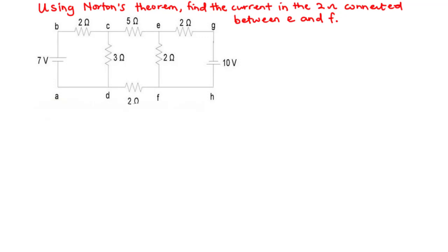The first thing we need to do is to remove the resistor we want to find the current flowing through — that is the 2-ohm resistor connected between E and F. Since we want to combine Norton's theorem and superposition theorem, we need to consider one source acting alone while we deactivate the other. We are going to consider the 7 volts acting alone while we deactivate the 10-volt source.